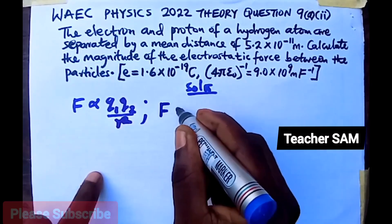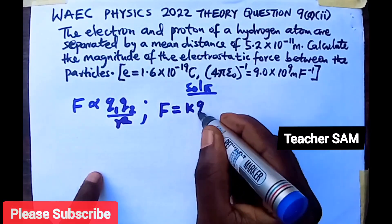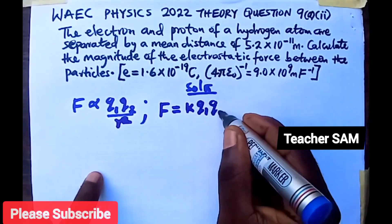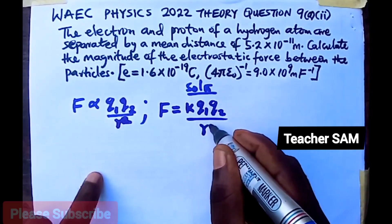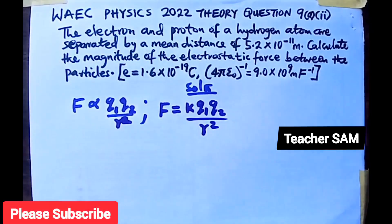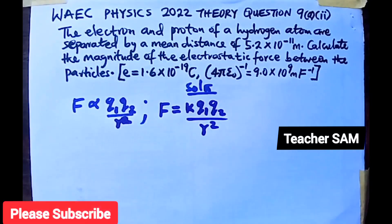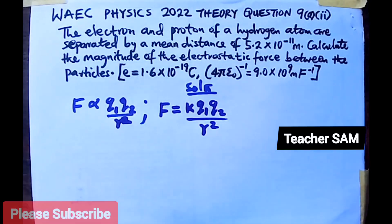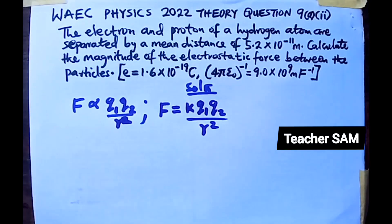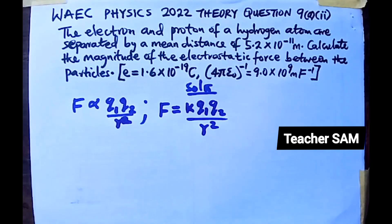Bringing in a constant, F equals K times Q1 times Q2, all over r squared. This relation is used to calculate the magnitude of the force between two charges separated by a particular distance.